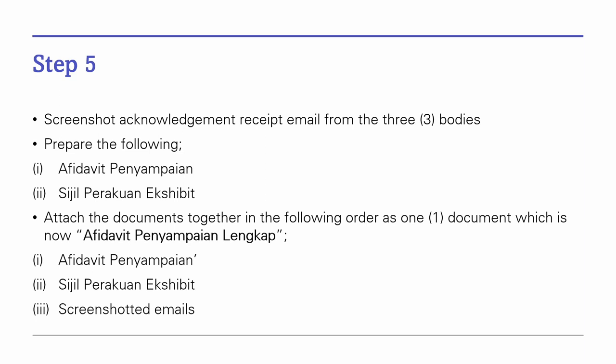Step 5: Once you email the sealed documents, the Malaysian Bar, the State Bar, and the Attorney General will acknowledge receipt of your documents. Screenshot the acknowledgement email. Now prepare both the Affidavit Penyampaian and Sigil Perakuan exhibit. Attach the screenshot emails with the Affidavit Penyampaian and the Sigil Perakuan exhibit. Make sure you arrange the documents with the Affidavit Penyampaian first, secondly the Sigil Perakuan exhibit, and then the screenshotted acknowledgement receipts of your sealed Forms 1, 2, and Affidavit.